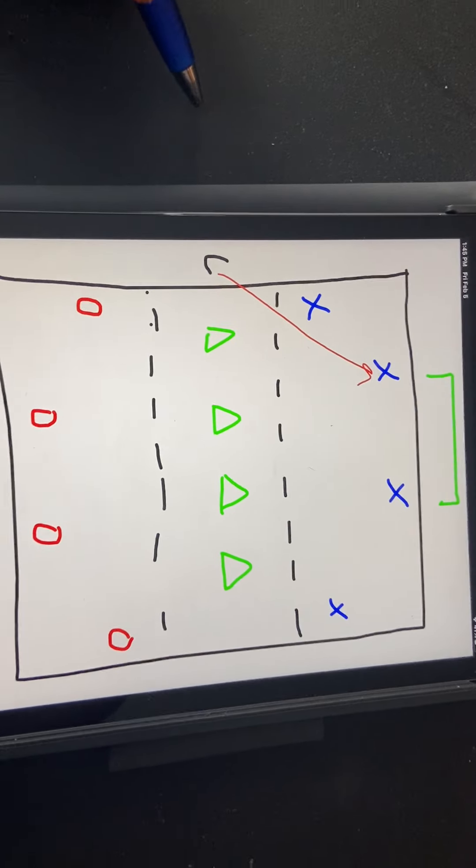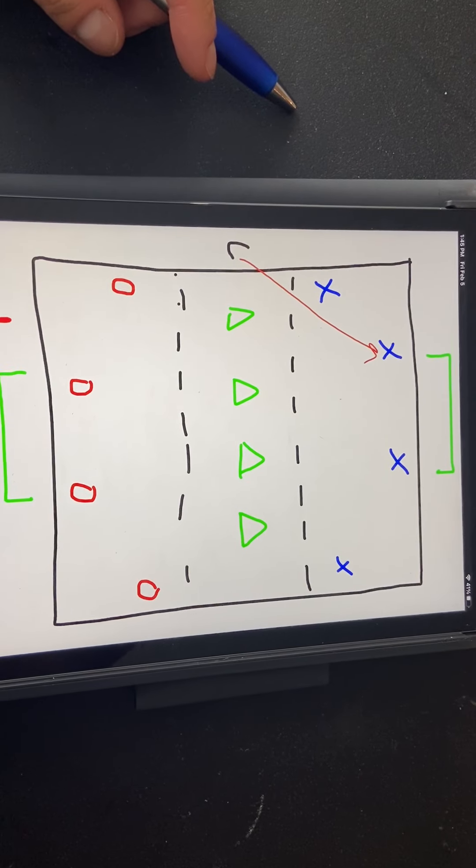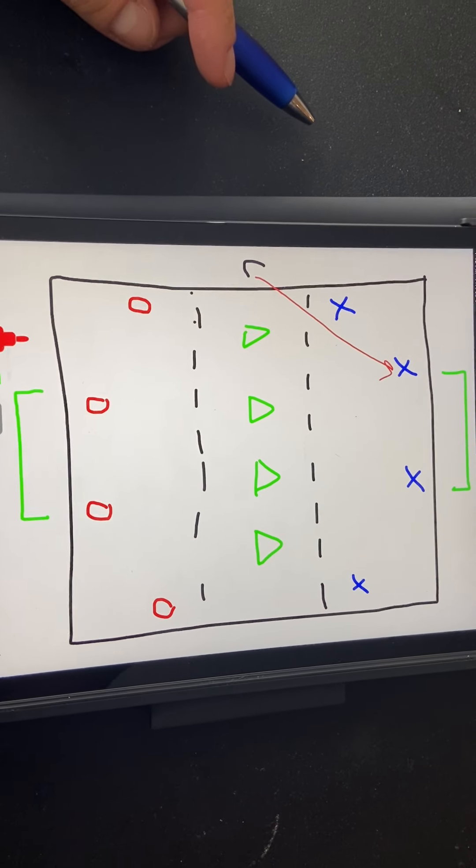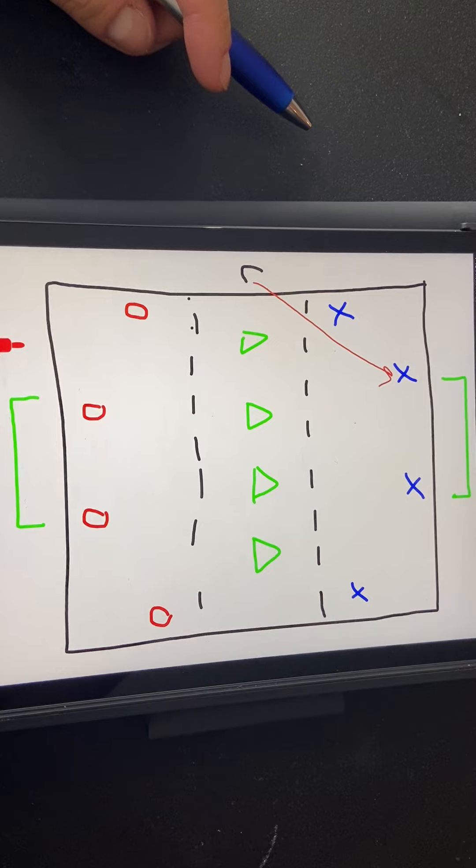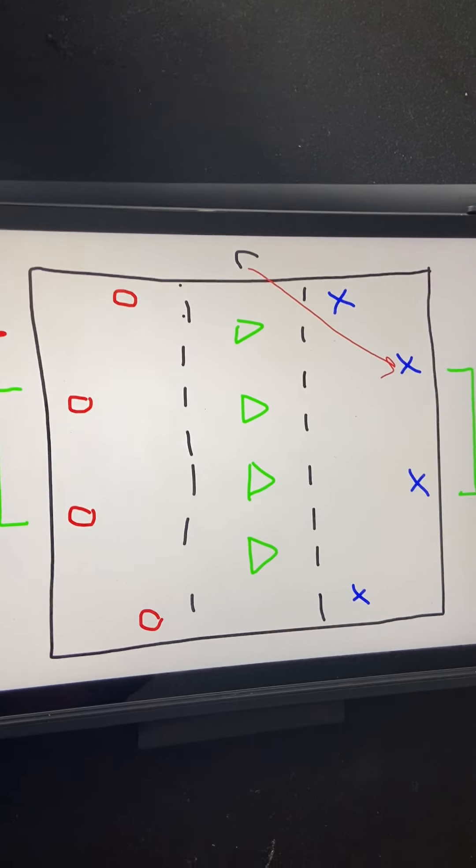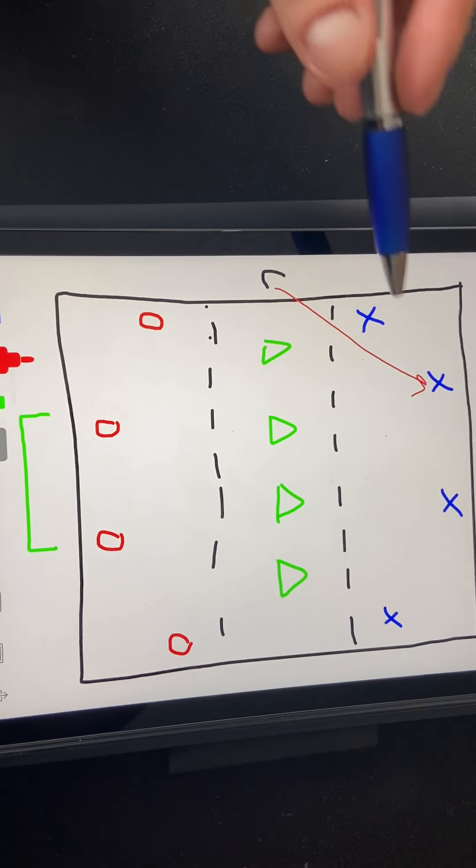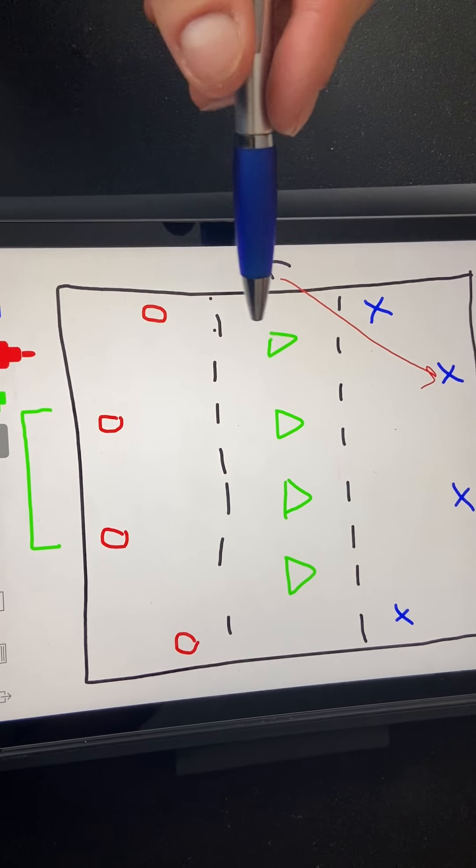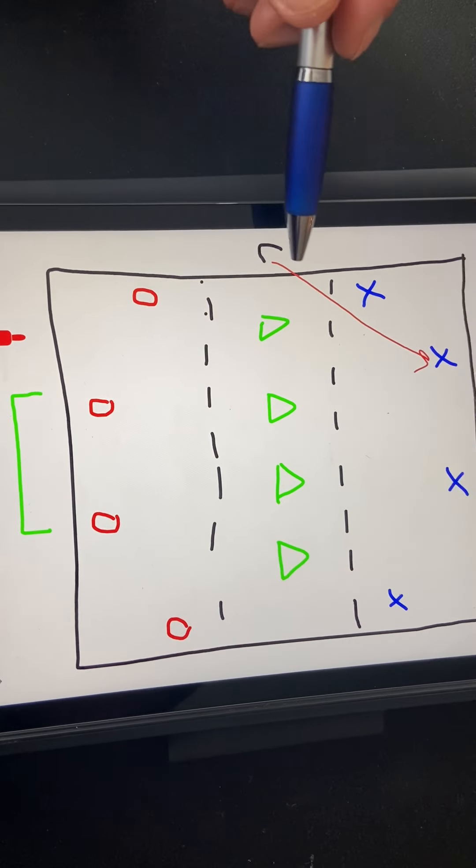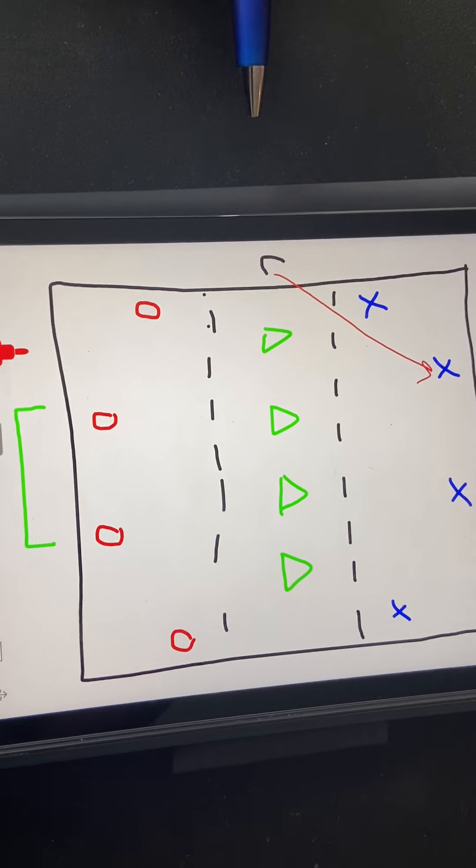OK, the last exercise everybody's probably played a version of before. This is a three team possession game over the river, three team transition, whatever you may call it. But essentially, there's three teams of four. We have a blue team, a green team and a red team. The coach will play the ball into an end line, an end zone.